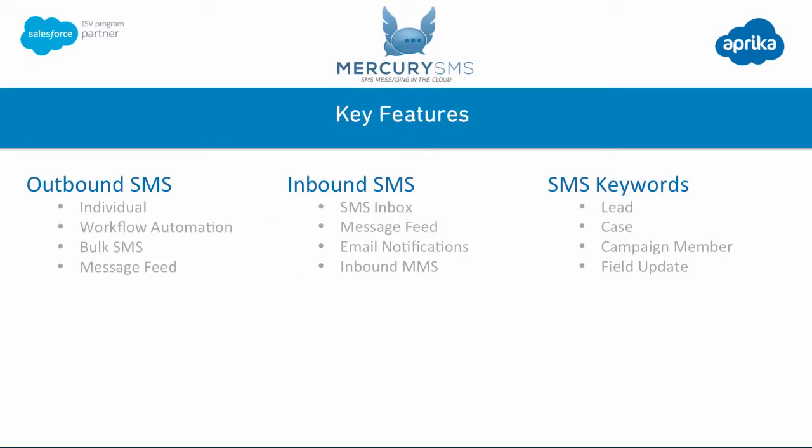Some of those key features are: Mercury SMS lets you send outbound messages from within Salesforce. You can do that at an individual level, you can automate it via workflow rules or process builders, you can do a bulk SMS to any list view on any object with a phone field, and you can also have a real-time two-way conversation via the message feed. From an inbound SMS perspective, all inbound messages are received into Salesforce and every single outbound and inbound message is stored as a task record within the standard Salesforce activity history.